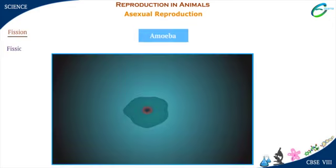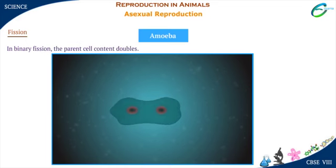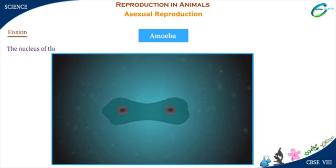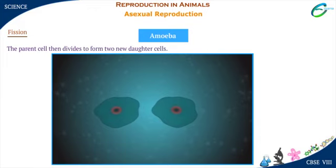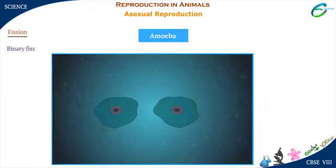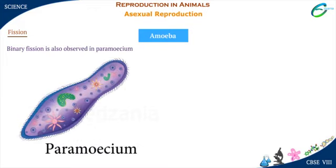Fission is observed in some microorganisms such as amoeba. In binary fission, the parent cell content doubles. The nucleus of the parent cell divides. The parent cell then divides to form two new daughter cells. Binary fission is also observed in paramecium and euglena.